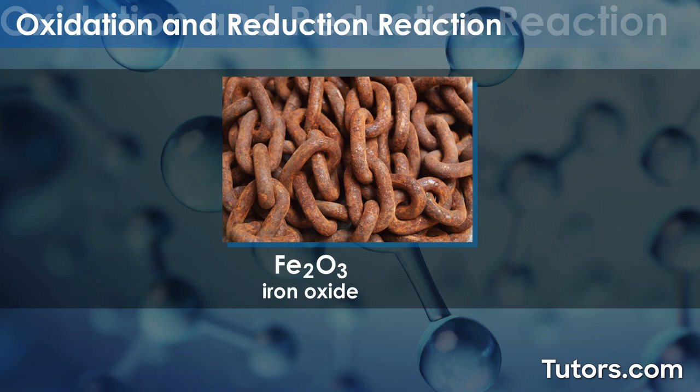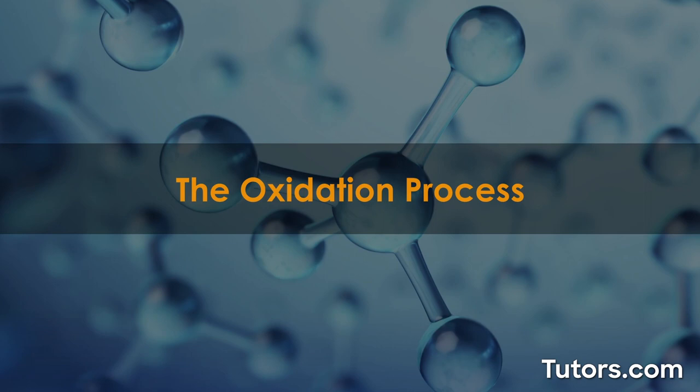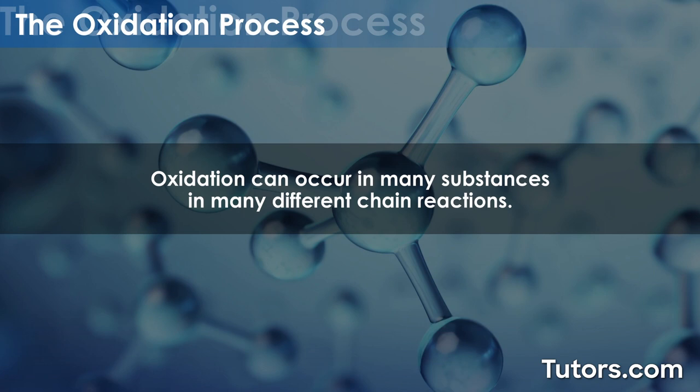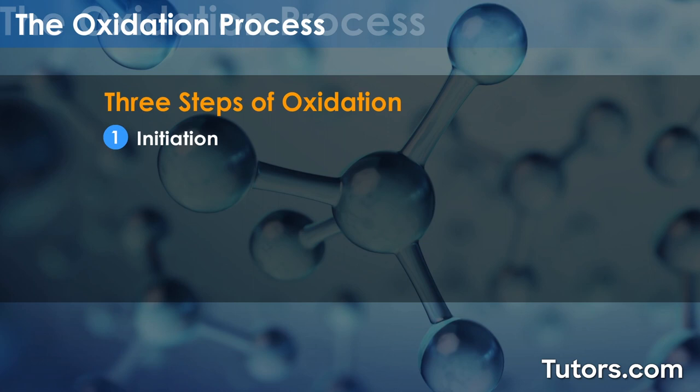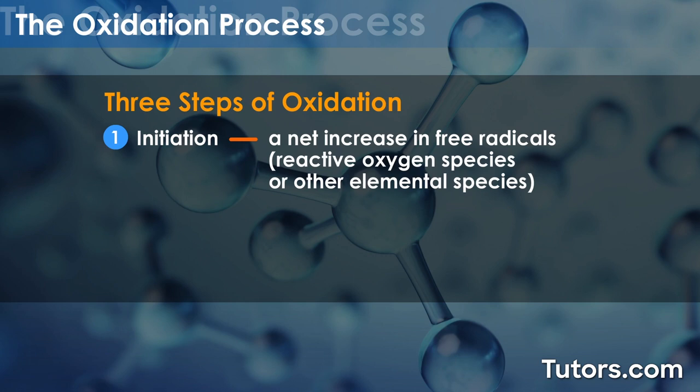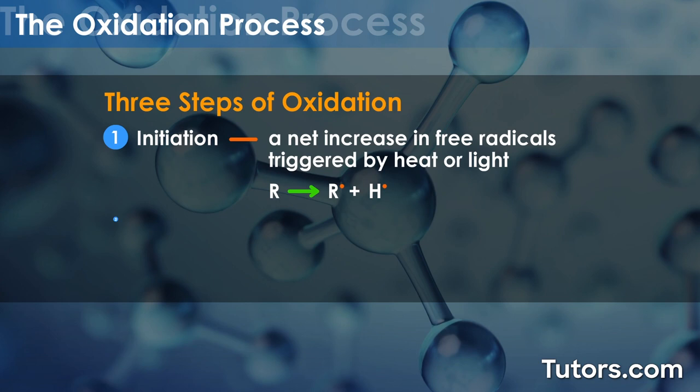You probably recognize iron oxide as rust. The oxidation process. Oxidation can occur in many substances in many different chain reactions. In general, there are three steps of oxidation. Step 1: Initiation — a net increase in free radicals, reactive oxygen species, or other elemental species, triggered by heat or light.